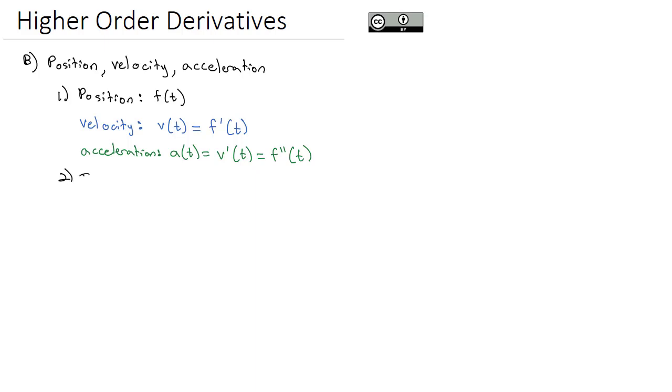So for example, if the height of a balloon at time t in meters is given by the function f of t equals 4t cubed plus 2t plus 9, we should be able to find the velocity and acceleration